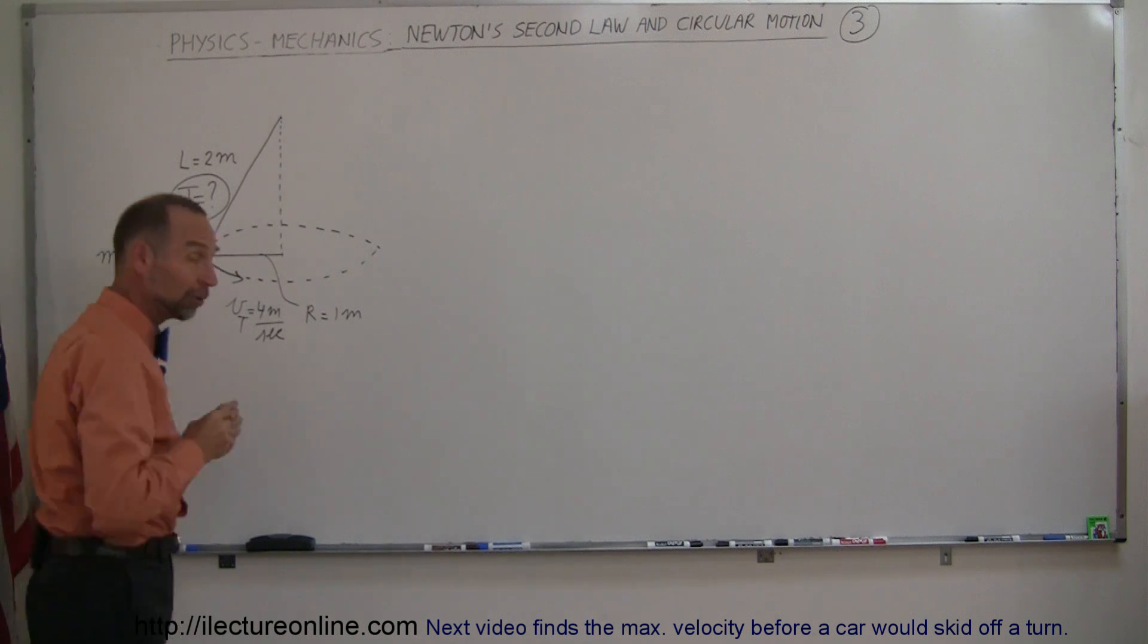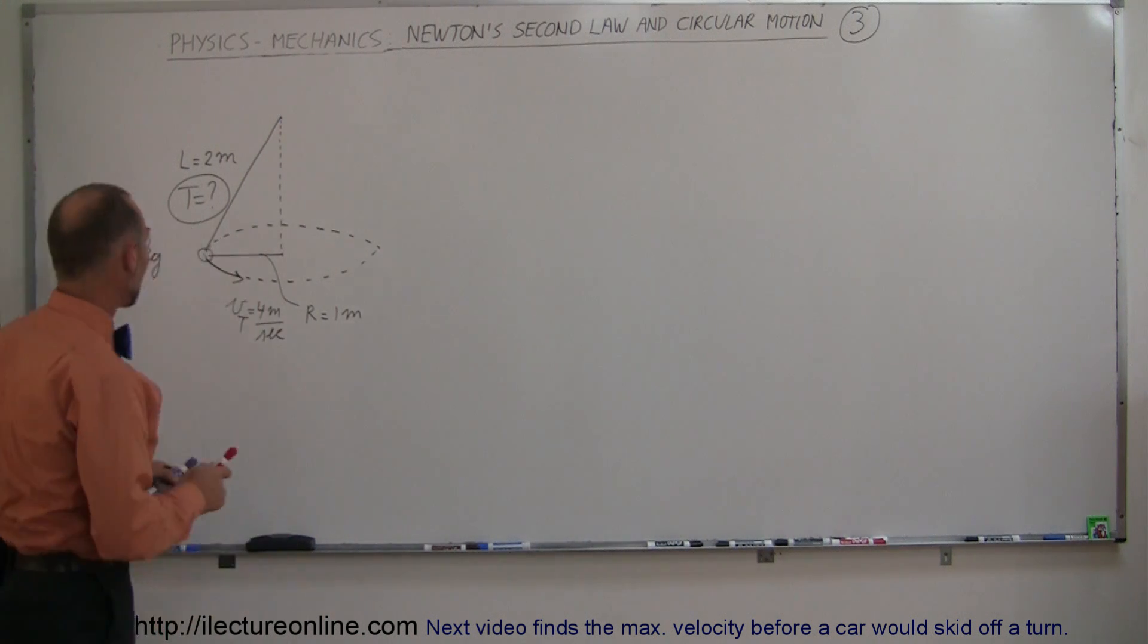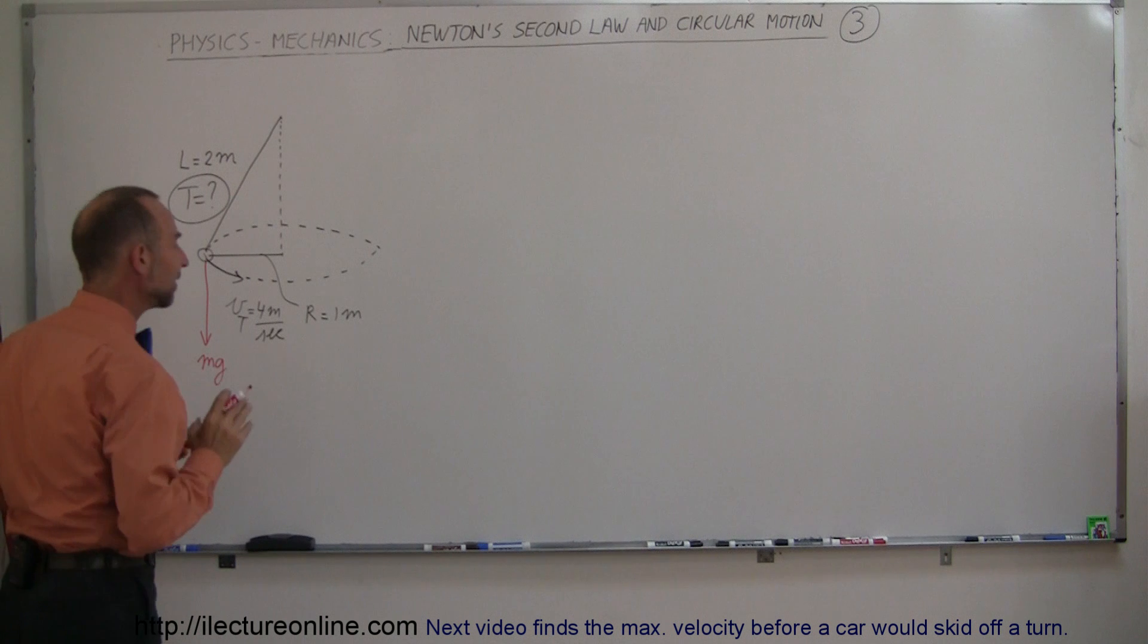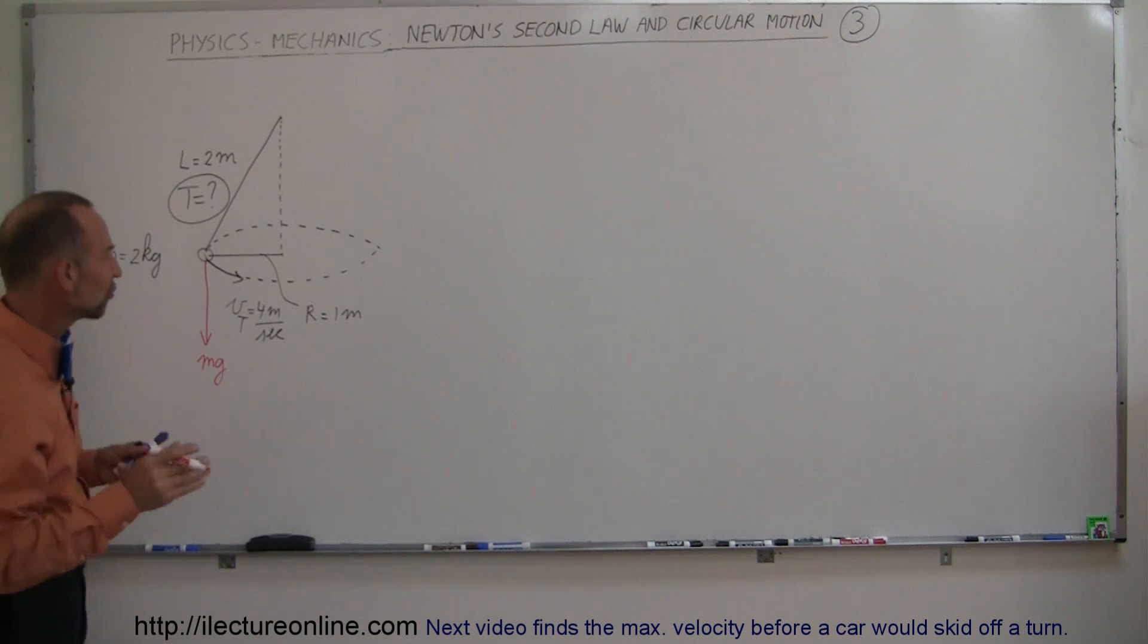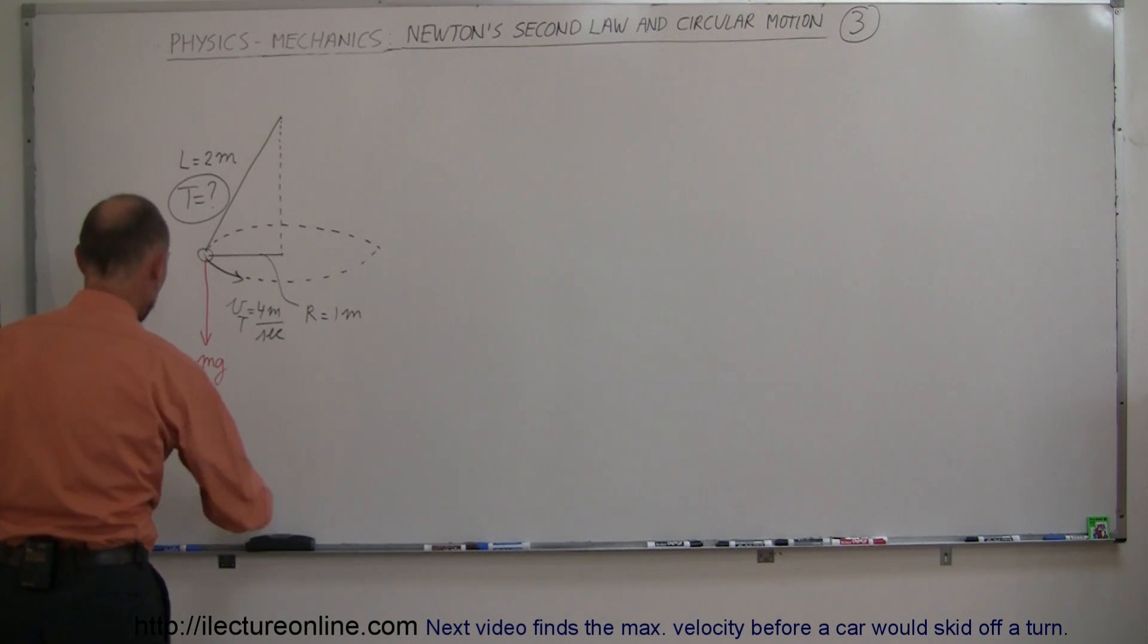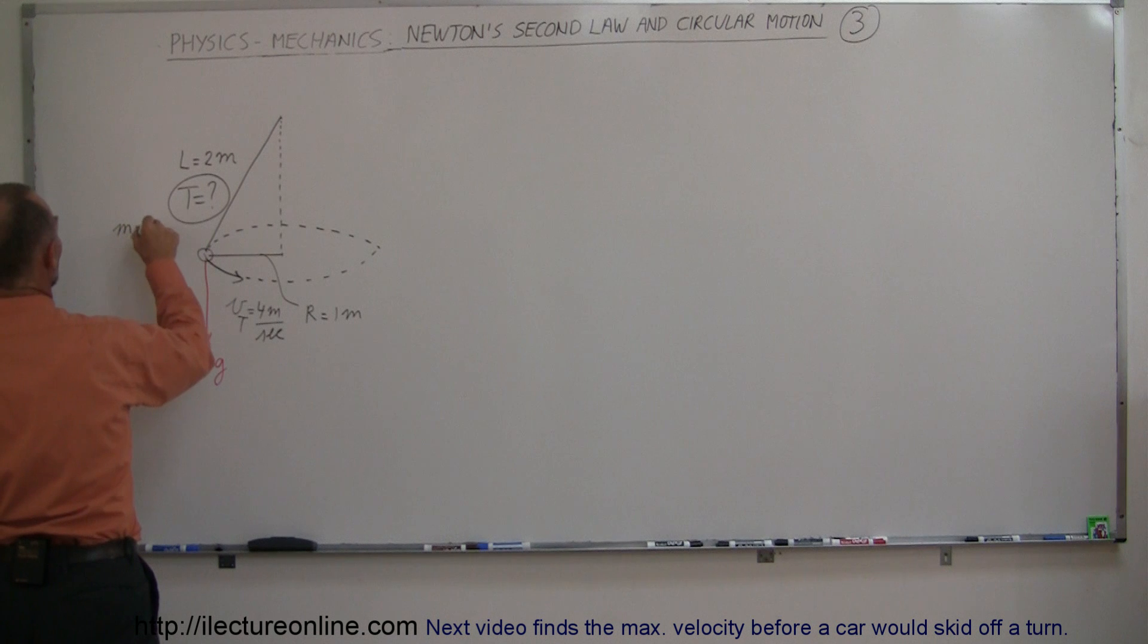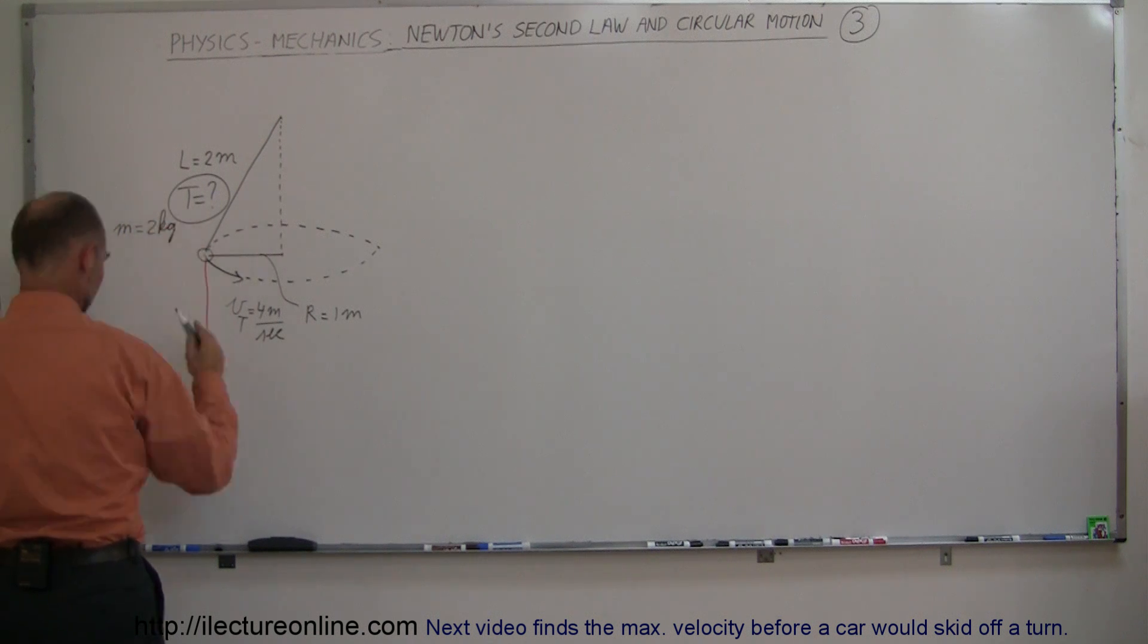What are all the forces acting on that mass? We have the force of gravity pulling straight down, which we call mg. Then we have the fictitious centrifugal force, which appears to be pushing it to the outside. Mass equals 2 kilograms.